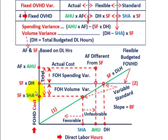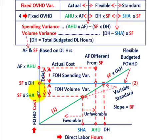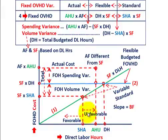For our total variance, that's simply the difference between the standard fixed rate times standard hours allowed, versus the actual fixed rate times actual hours used. On the chart, you can see that's the difference between our actual amount and our standard amount — that's our total costing variance. The difference in the x-axis between standard hours allowed and actual hours used also reflects the basis in terms of direct labor hours.